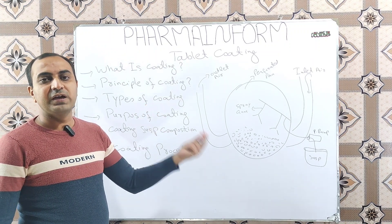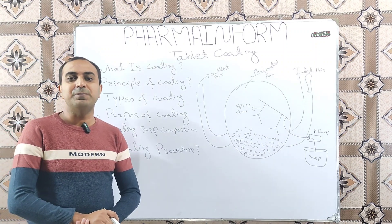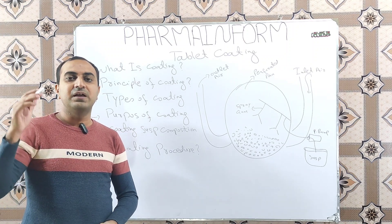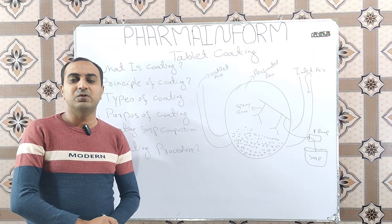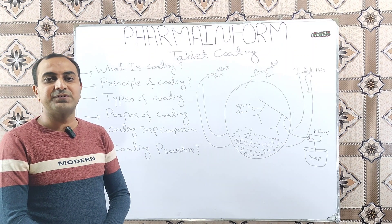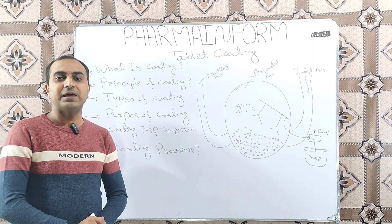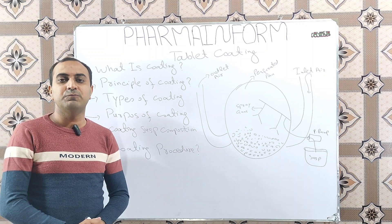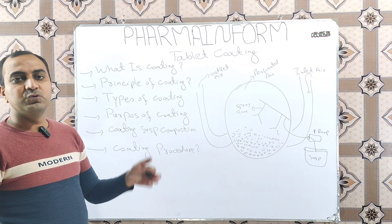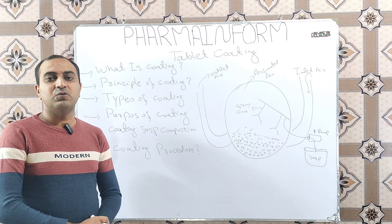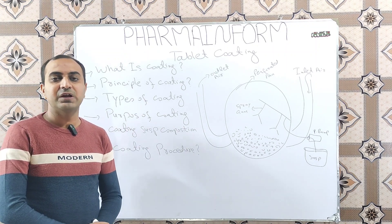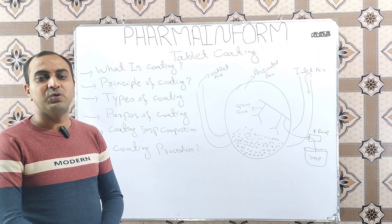The composition of tablet coating suspension is straightforward. First, we have a suitable solvent — the solvent may be aqueous or organic, meaning we can use water or organic solvents like isopropyl alcohol. The main component of the suspension is the polymer; we can use types like HPMC (hydroxypropyl methylcellulose). We also use suitable food-grade colorants in the coating suspension.